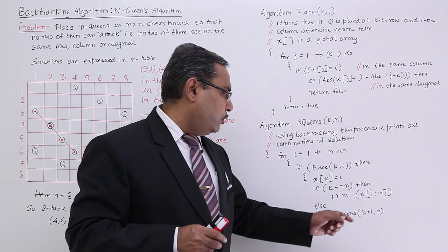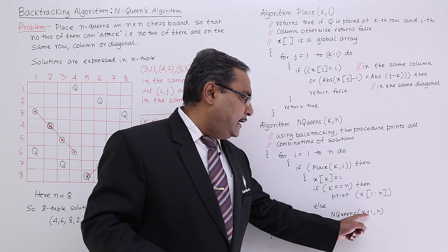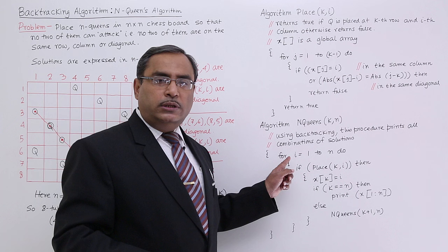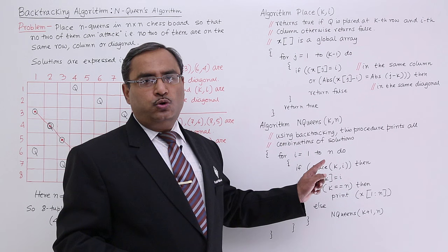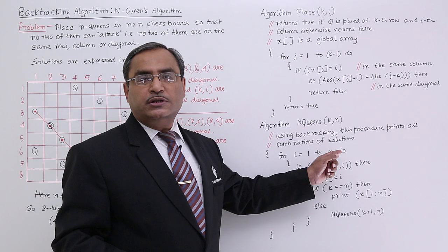Now if this condition is not true, that means if k is not n, then I shall go for the next queen. So else N-Queens(k+1, n) — again this particular algorithm will be called. For the (k+1)th queen, again I shall have to check whether that queen can be placed for all column numbers ranging from 1 to n. That is why this particular algorithm will give us all possible solutions — using backtracking, this procedure prints all combinations of the solutions.